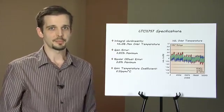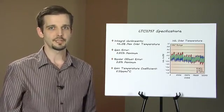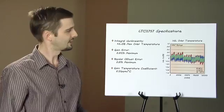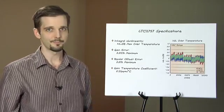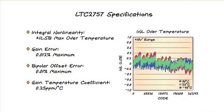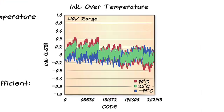Let's take a look at the basic specifications. The LTC2757 has a guaranteed integral non-linearity of one least significant bit over temperature. At the 18-bit level one LSB is four parts per million. While the guaranteed INL is one LSB, this plot shows that a typical part has an INL of about a quarter of an LSB or around one part per million.